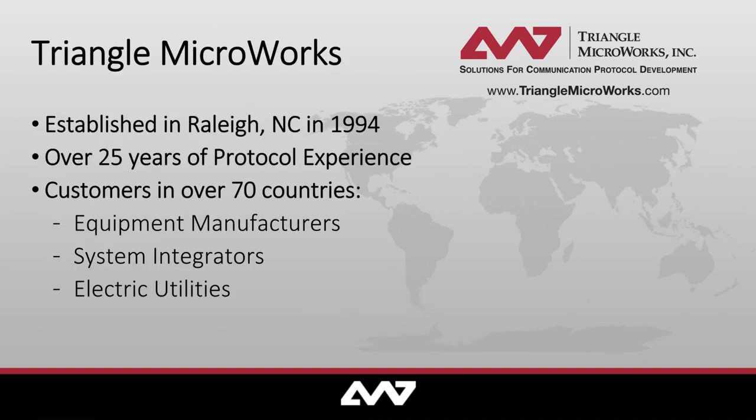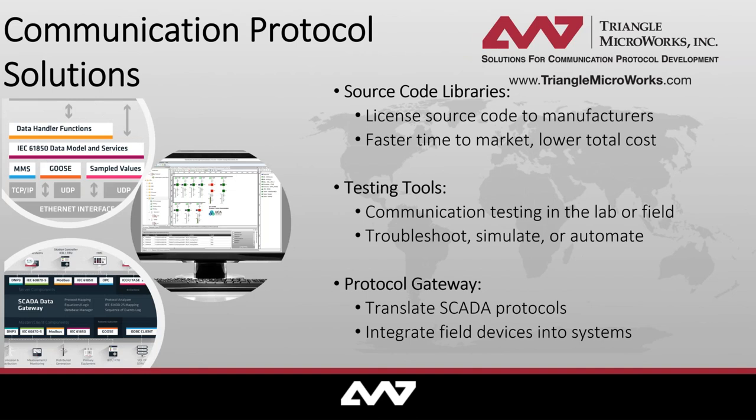Now that you know everyone, I'd like to give you a little bit of background on Triangle Microworks before we get started. Triangle was established in 1994 and we are headquartered in Raleigh, North Carolina. We have customers in over 70 countries and work mostly with equipment manufacturers, electric utilities, and system integrators. The products that we offer all support the standard SCADA protocols and fall into three categories. First category is source code libraries — we license source code directly to manufacturers for use in their devices and systems, which allows for a much faster time to market and greatly reduces their costs and development time.